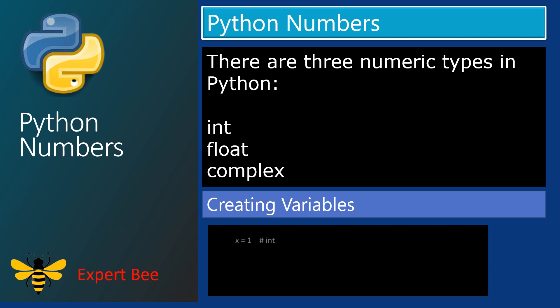x is equal to 1. Here, x is declared the moment you have assigned 1 to x. 1 is an integer value, therefore the data type of x is integer.